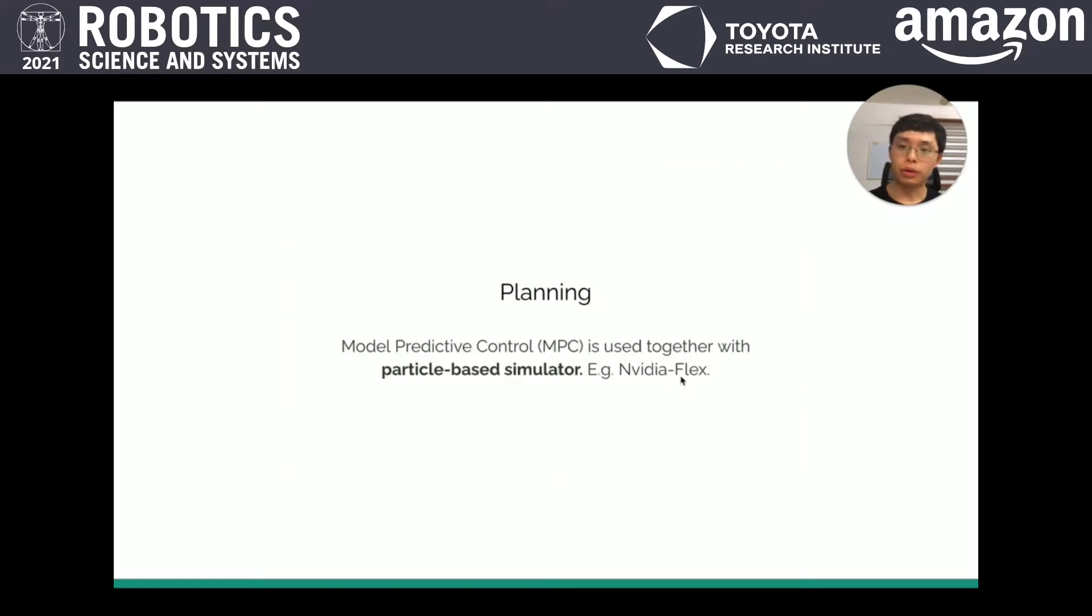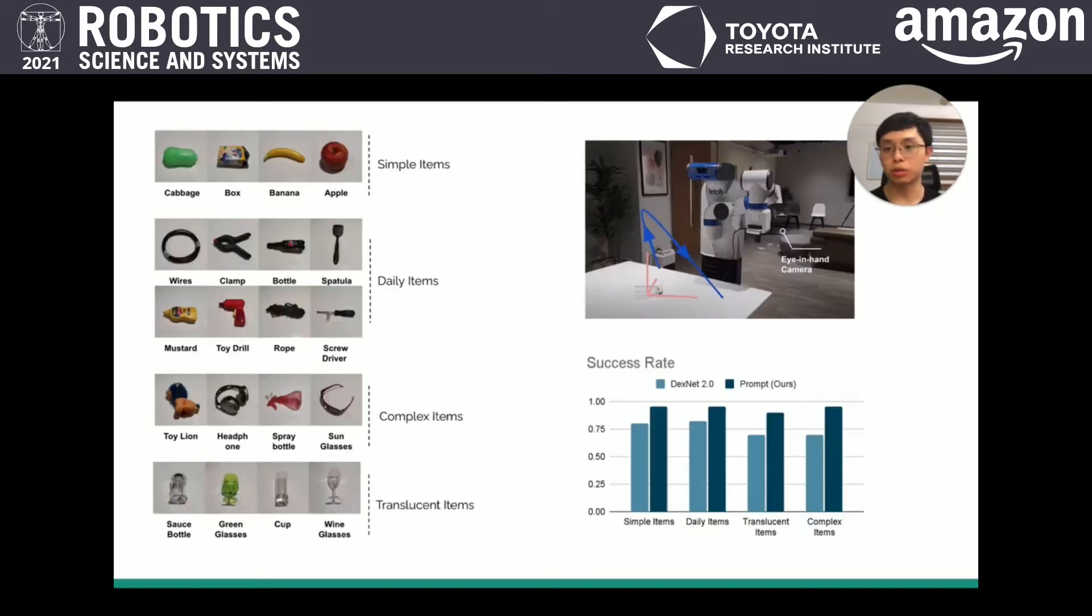Finally, we are doing model predictive control together with a particle-based simulator, such as NVIDIA Flex, to perform reasoning and find the best grasp-based actions. We test our approach in the real world with robot grasping tasks. There are four sets of objects in the testing set, and some of them are even translucent objects. The result shows that we are doing well in the real world and we can even beat the baseline method.